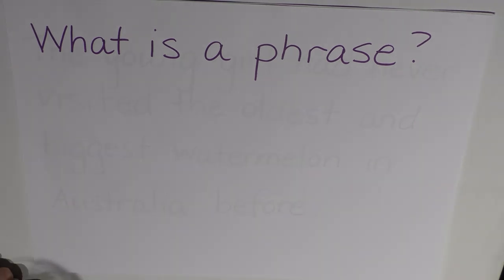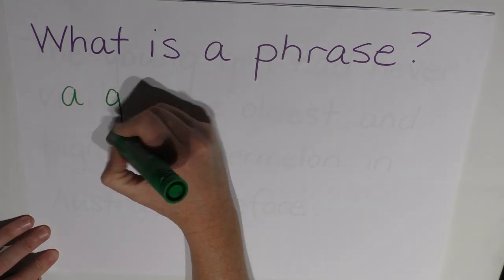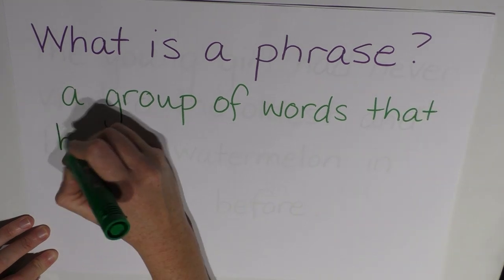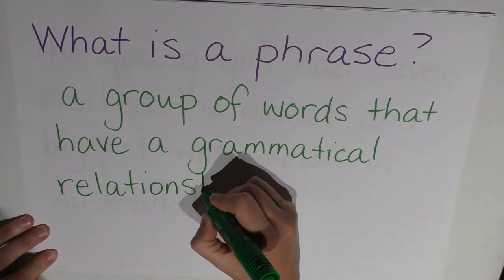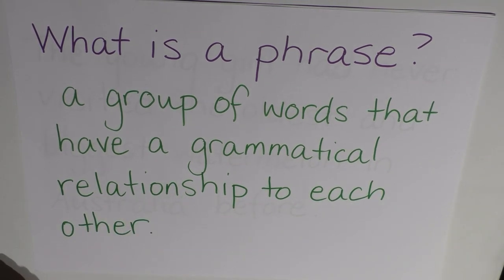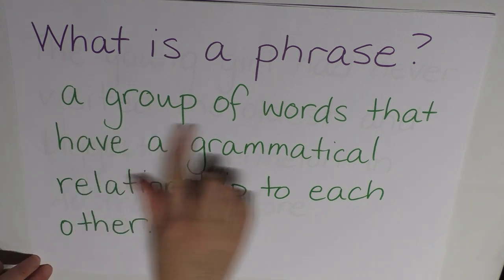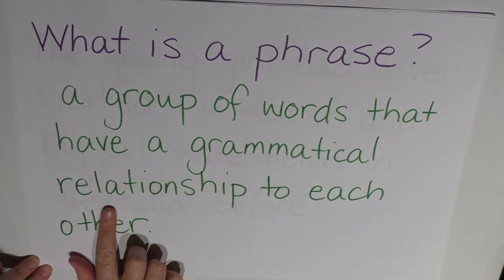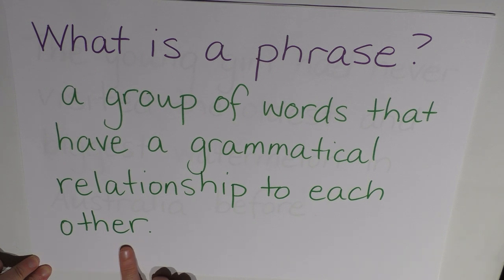So let's do that. What is a phrase? Well, a phrase is a group of words that have a grammatical relationship to each other. So I'll write that down. So let's check that then. A phrase is a group of words that have a grammatical relationship to each other. So that means that a noun phrase is a group of words all pointing to the noun, like the thick textbook. Textbook is the noun, thick describes the textbook and the is defining the textbook. So that's a noun phrase. An adjective phrase is a group of words with an adjective at its head and so on and so forth.